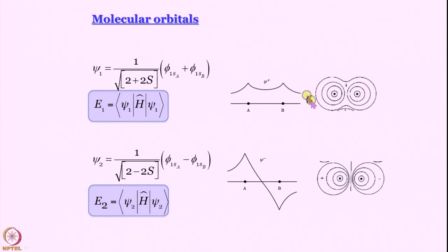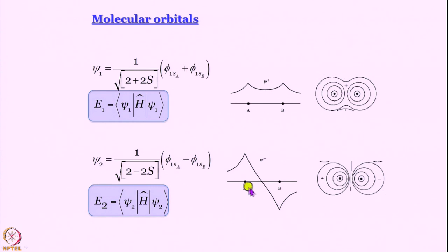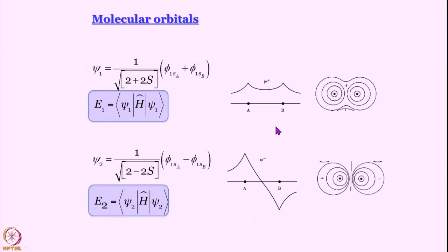From the contour diagrams, it is quite obvious that in the upper case — the bonding case — there is a buildup of electron density between the two nuclei, leading to stabilization. In the other case, there is a depletion of electron density between A and B, contributing to increased internuclear repulsion, giving a higher energy state. This is called the bonding situation and the anti-bonding situation respectively.